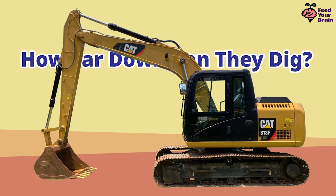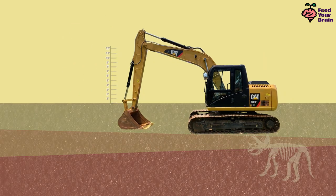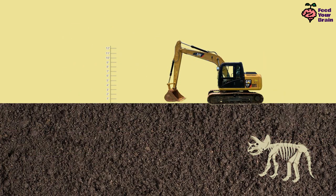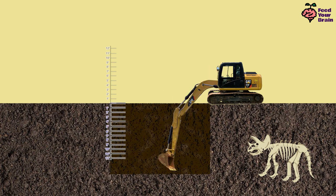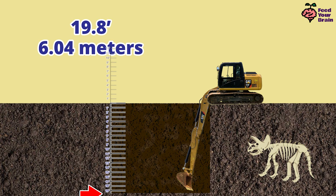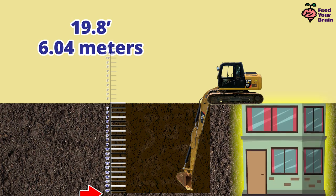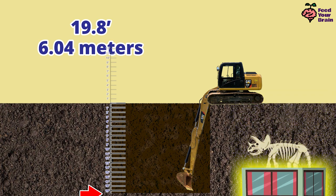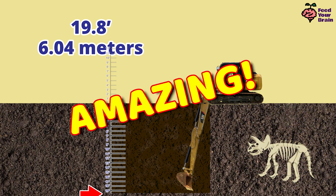How far down can this model 313F excavator dig? We have to zoom out far, because the hole will be pretty deep. This model excavator can dig down to 19.8 feet down. That is almost the distance of the height of a 2-story building. Isn't that amazing?